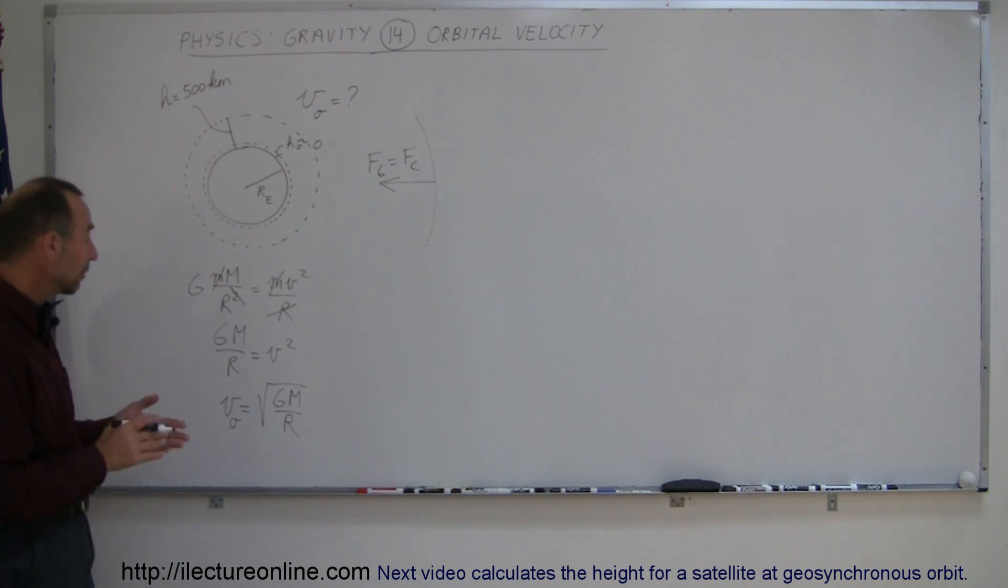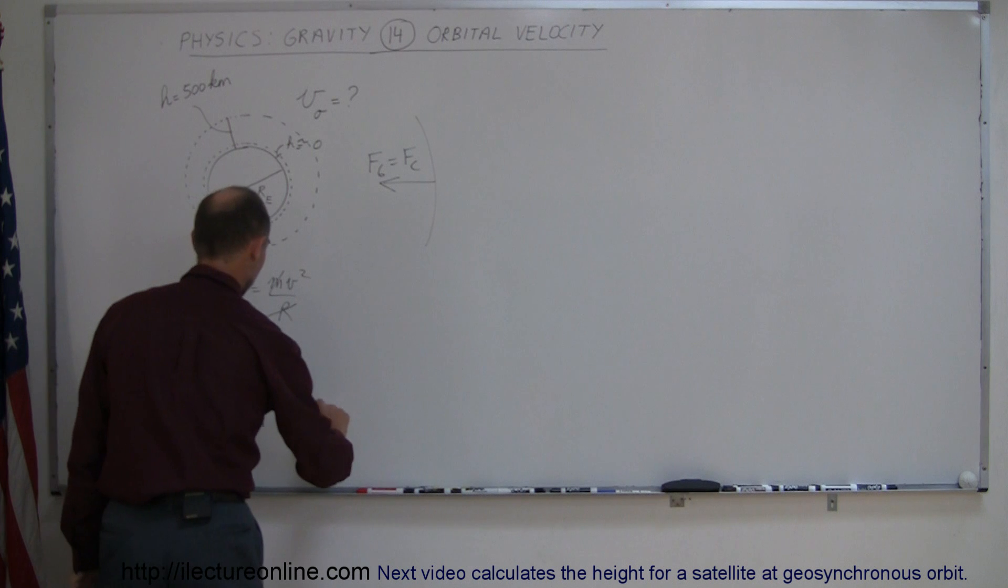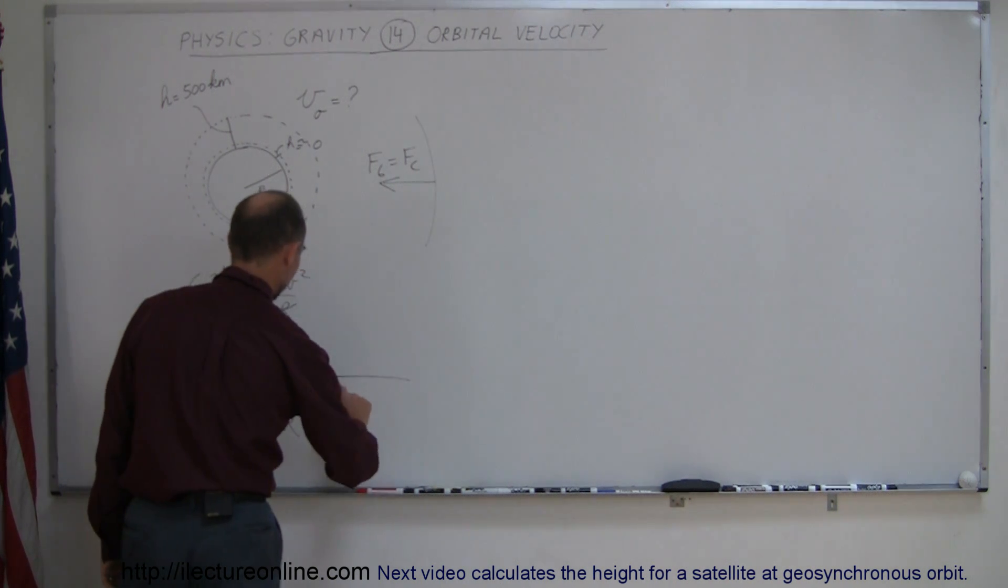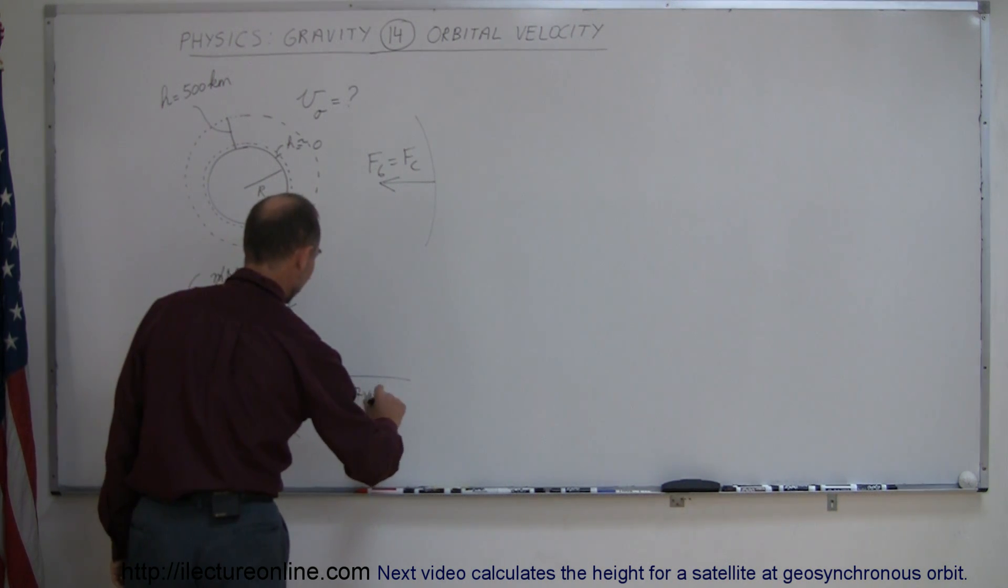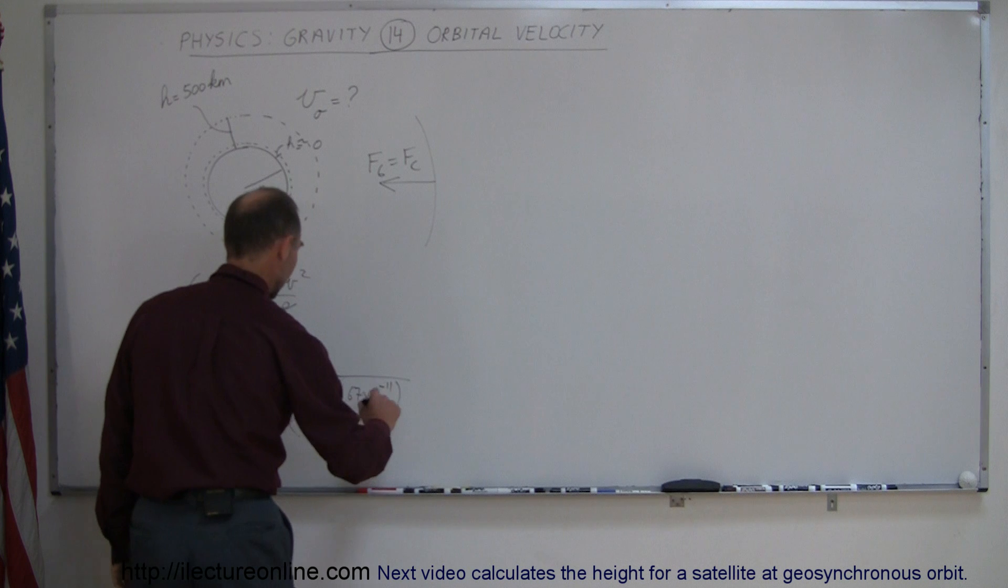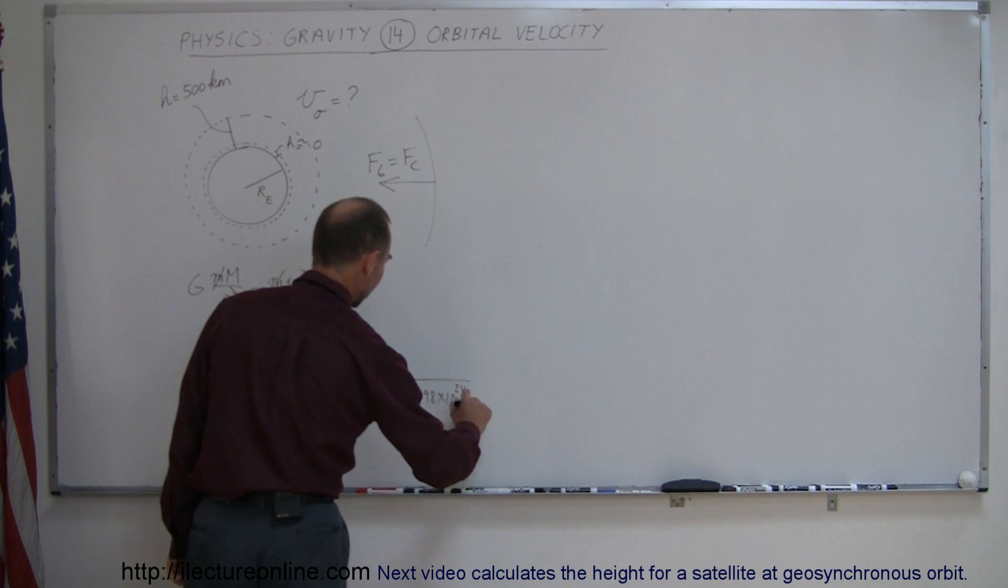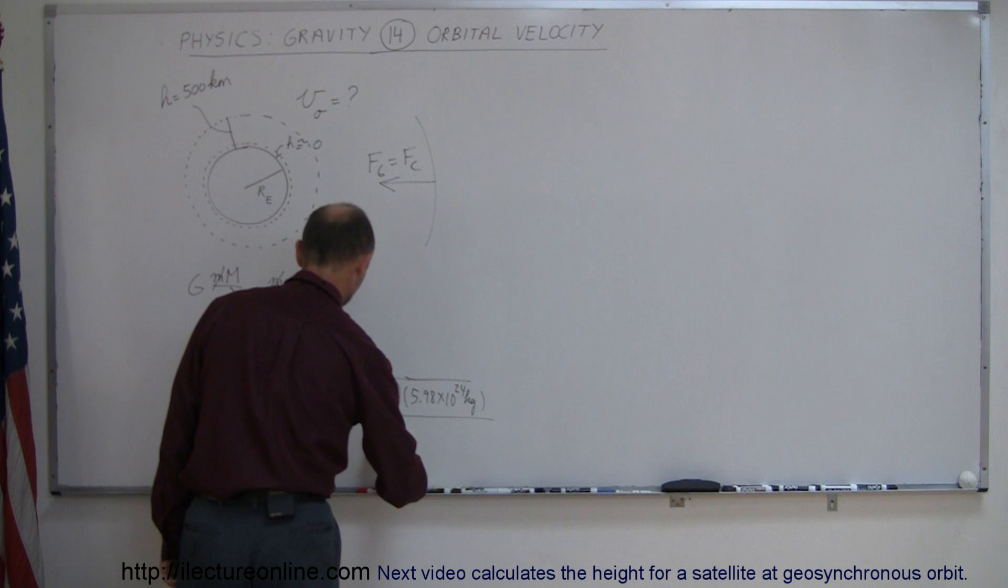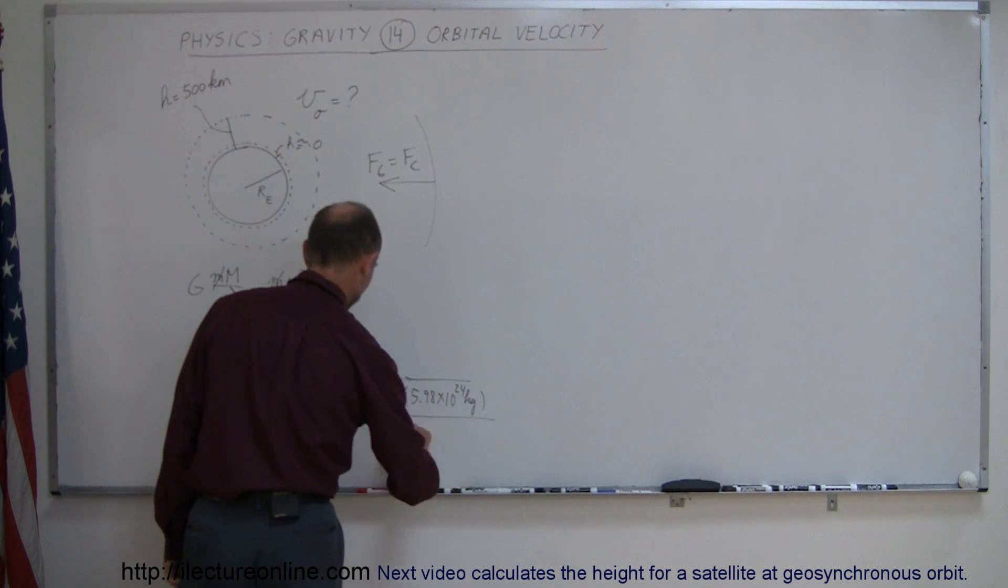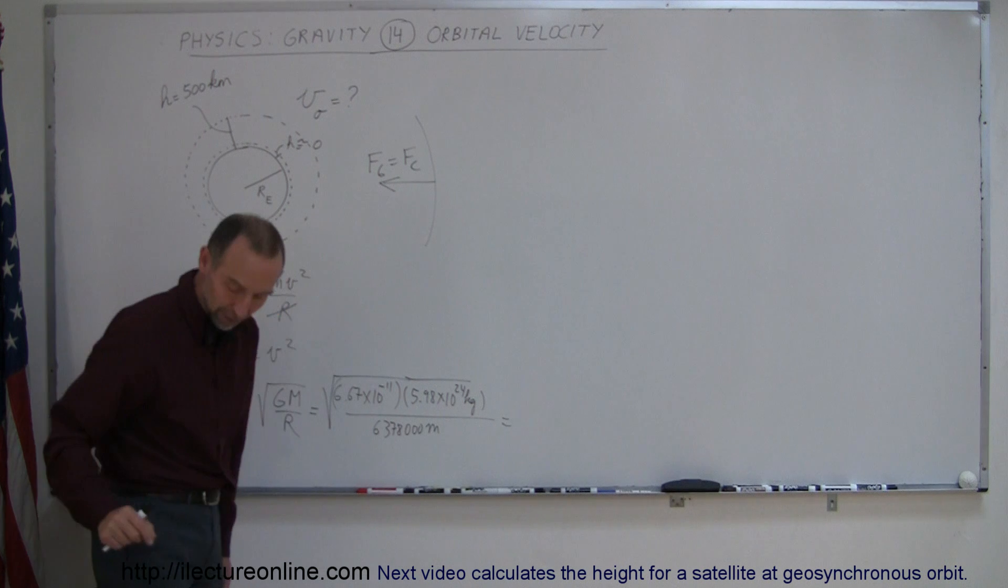Now let's see what that would be if we plug in some numbers here. This is equal to the square root of 6.67 times 10 to the minus 11, multiply times the mass of the Earth, which is 5.98 times 10 to the 24 kilograms, and the whole thing divided by the radius of the Earth, which is 6,378,000 meters.